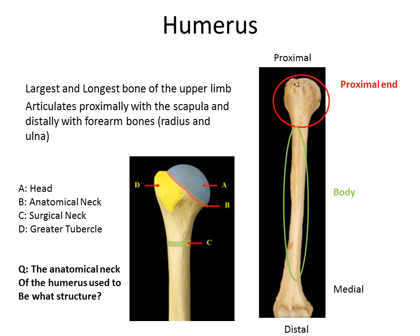Looking at the proximal humerus, we can label structures A through D. A is the head of the humerus, B is the anatomical neck, C is the surgical neck, and D is the greater tubercle. The humerus has two necks — anatomical and surgical. The anatomical neck is the official neck of the humerus and was previously the epiphyseal plate during the growth process. The surgical neck is named based on statistics for injuries to that area of the bone.